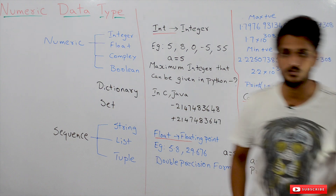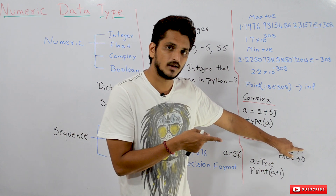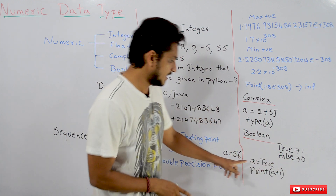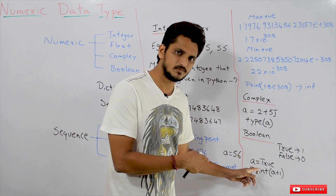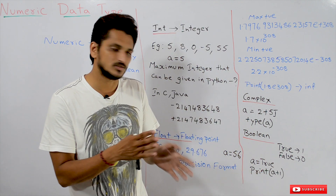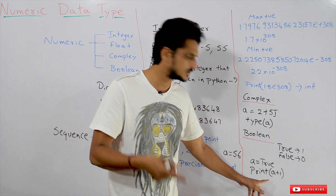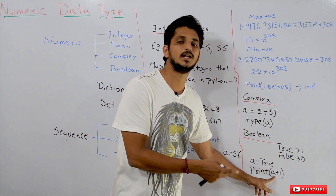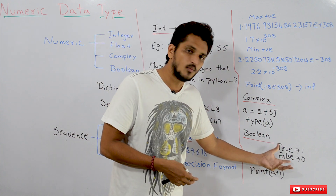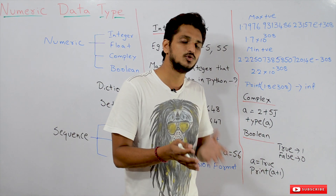The next one is Boolean. In Boolean, we have only two values: True or False. True is assigned the value 1 and False is assigned the value 0 in numeric context. For example, A is equal to True — A is of type Boolean. If we print A plus 1, A is involved in numeric context so True is treated as 1, giving us 1 plus 1 equals 2. We will understand the full use of Boolean when we discuss comparison operators in our next class.